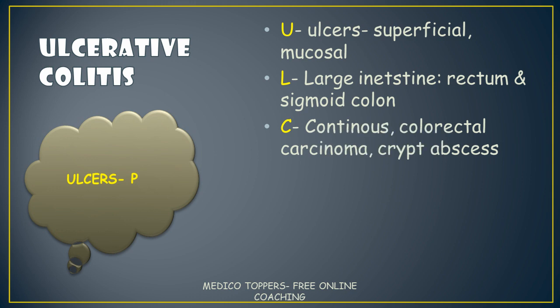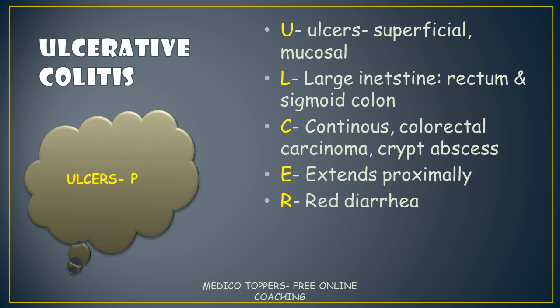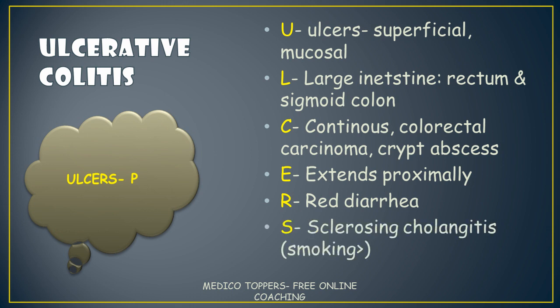C — it will be continuous, may lead to colorectal carcinoma, and we can see crypt abscess in ulcerative colitis. E — it extends proximally. R — it will lead to bloody diarrhea, that is red diarrhea. S — ulcerative colitis is always associated with sclerosing cholangitis. Importantly, smoking reduces the risk of developing ulcerative colitis and sclerosing cholangitis — this is a very important MCQ point.